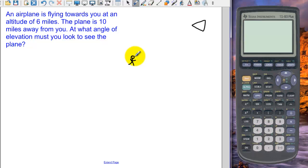And we are looking at the airplane and the airplane's 10 miles away from us. And we know the altitude, and altitudes are formed by right angles with our ground, so this is 6 miles. And we want to know how high we're looking up, what angle we're looking up, that's our angle of elevation, so that's theta.